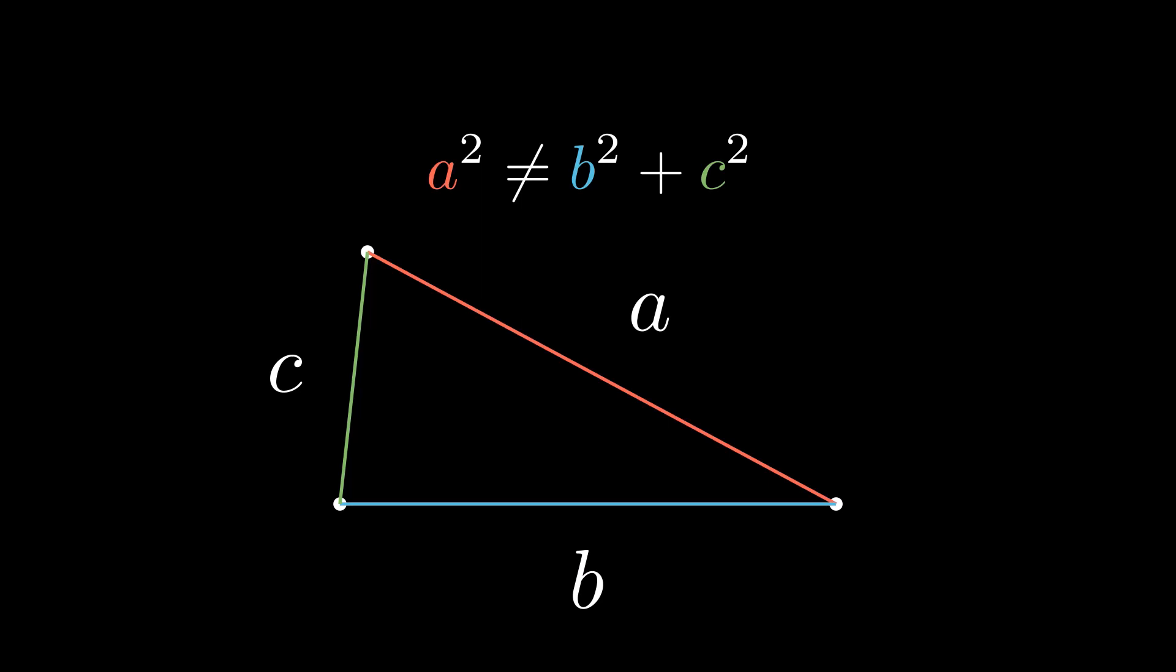Wouldn't it be nice if there was a more general equation for a more general set of triangles? To understand how to generalize the Pythagorean Theorem, we have to understand how it works. And for that, I'll show you my favorite proof. Who knows, maybe we'll discover something new.